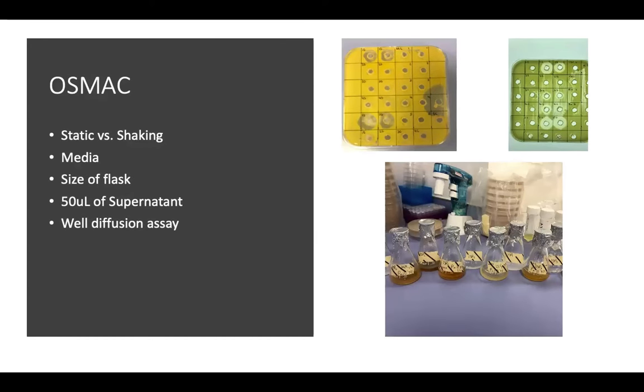Just briefly, as Grant has already explained, an OSMAC is an approach where a multitude of variables are assessed in order to determine the best conditions to grow a species in for the largest zones of inhibition. I addressed several parameters and intend to continue OSMAC experiments in an attempt to encourage further secondary metabolite production. On analysis of Streptomyces microflavus, I assessed static versus non-static, various media components, growth time, and the size of Erlenmeyer flask for optimal activity to be determined.